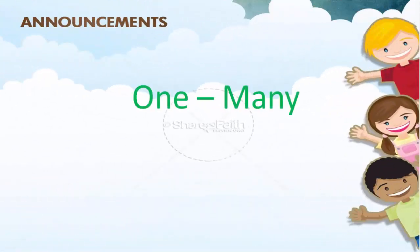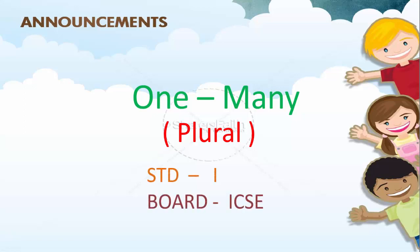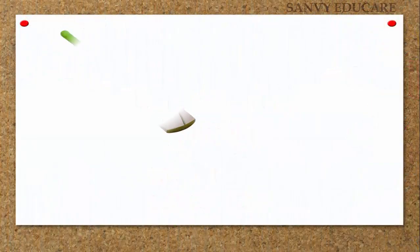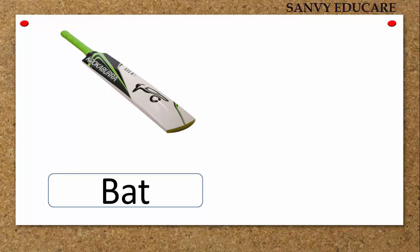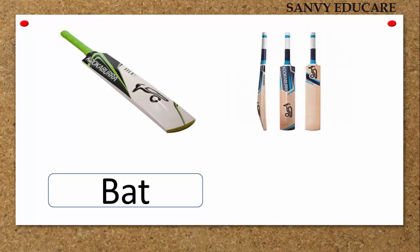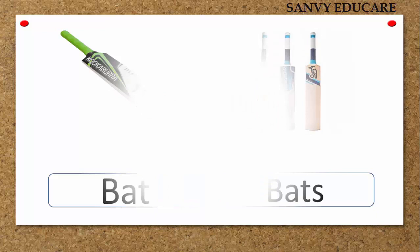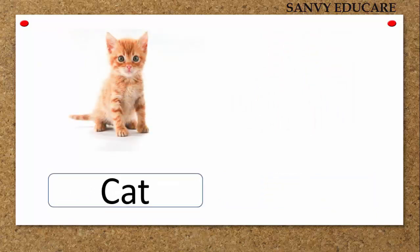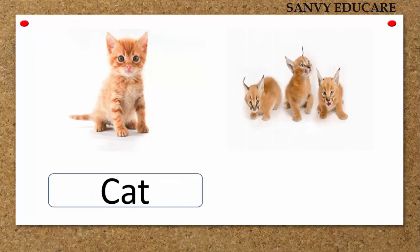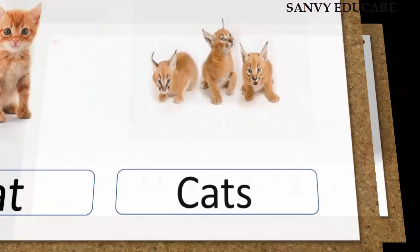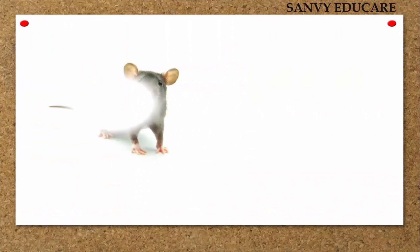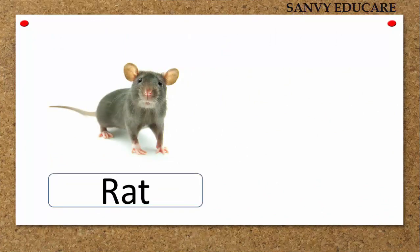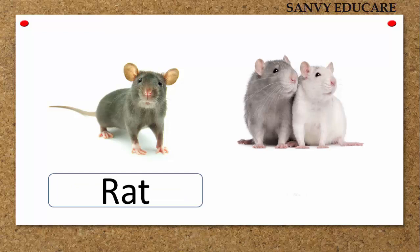One, many — plural. Standard First, Board ICSE. One bat, many bats. One cat, many cats. One rat, many rats.